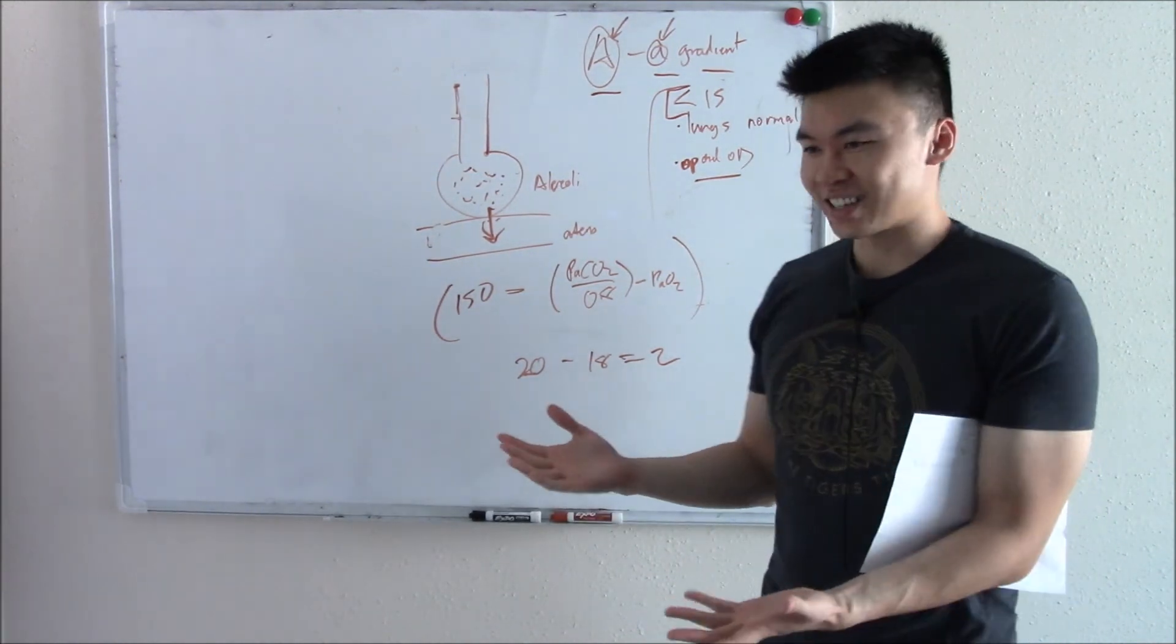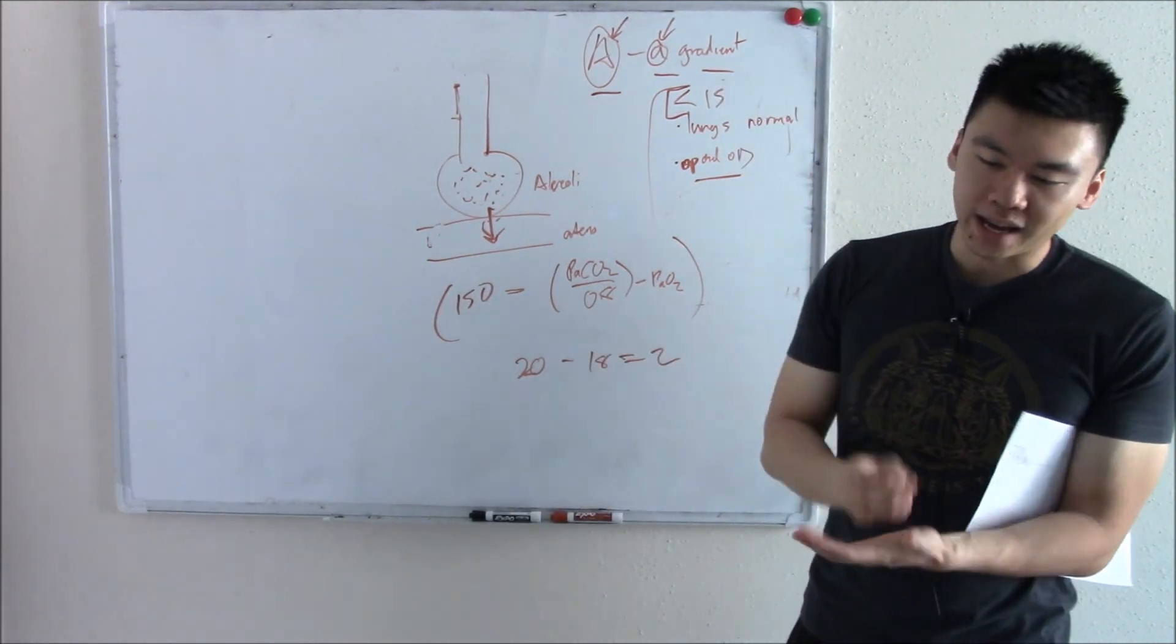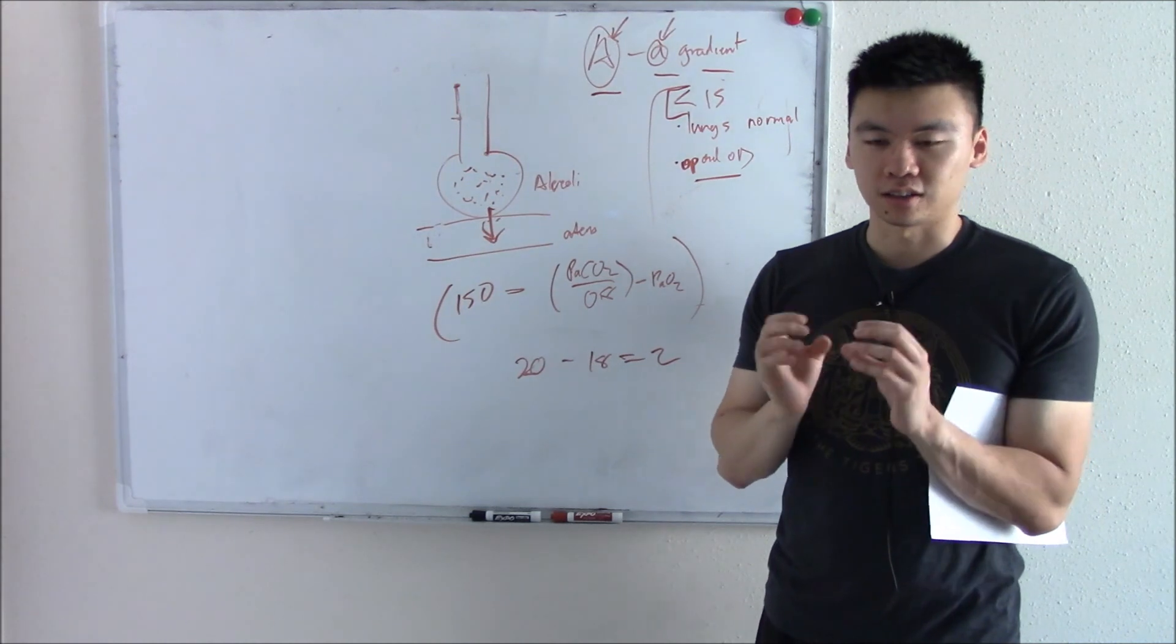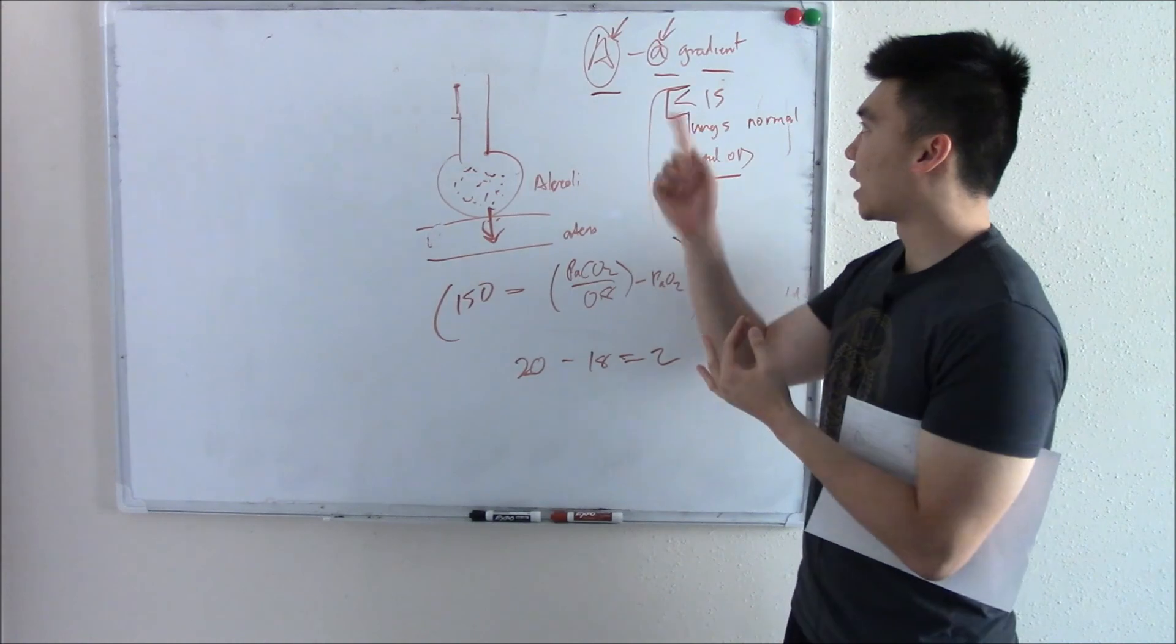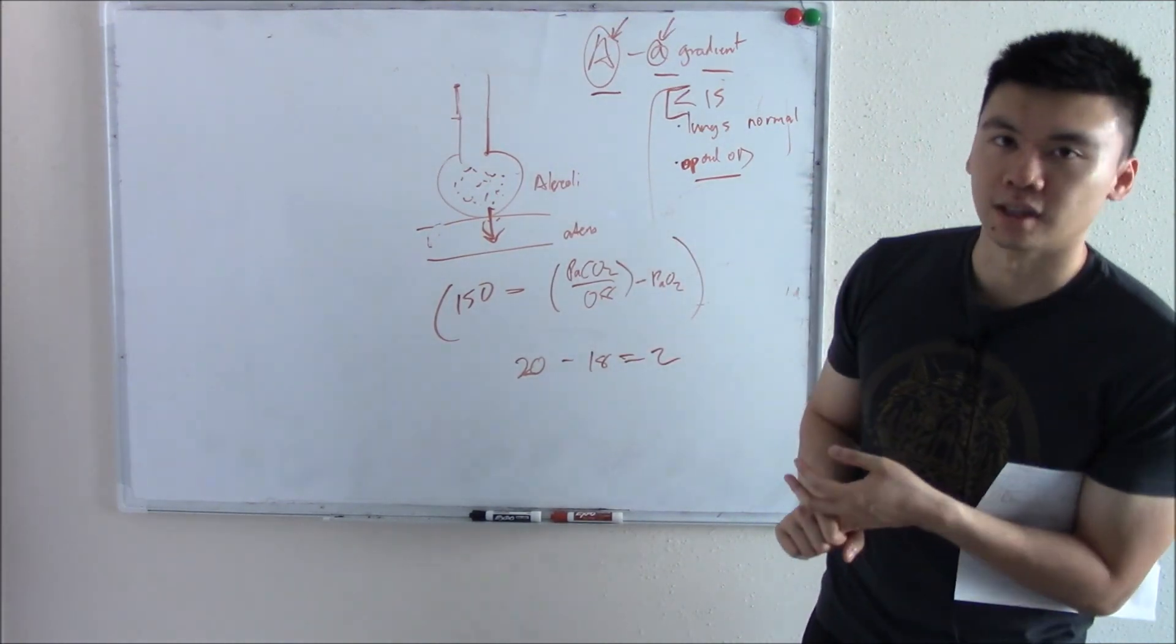That actually does it for this video. Nice short video. The main concept: Not all the oxygen that goes into your lungs goes into your blood. And if you can identify that with VQ, if you can identify it with the AA gradient, then you should be golden. Thanks.